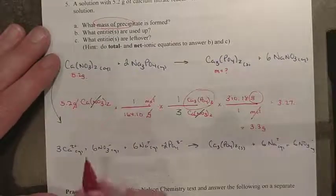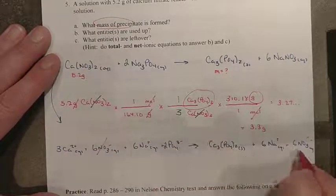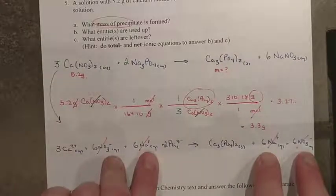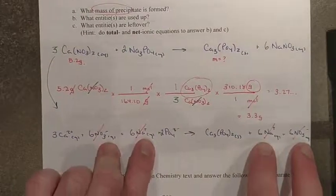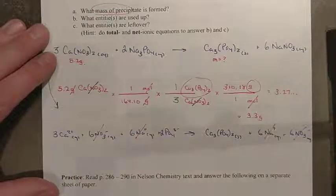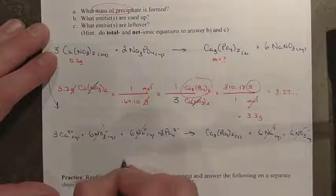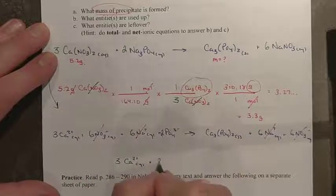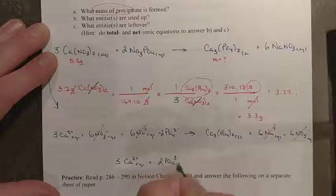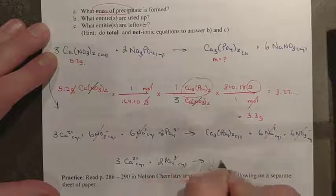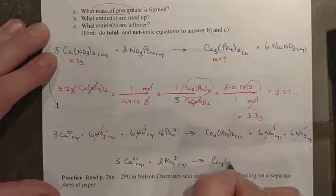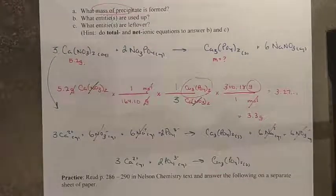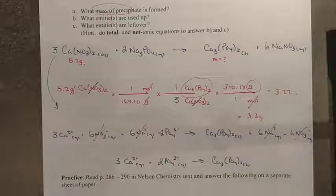When you go through, you can see that nitrate was a spectator. So too was sodium because they stayed in the solution before and afterwards. So the net reaction that we saw was really just between three calcium 2+ ions, two phosphate ions to form the precipitate of calcium phosphate.